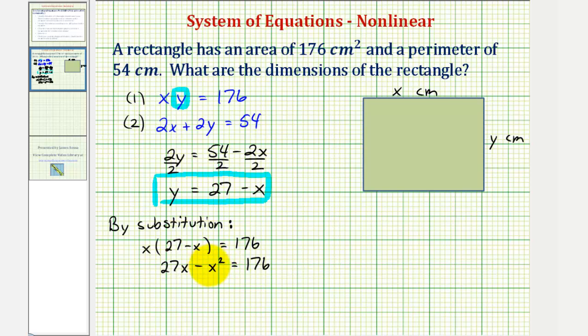We prefer the x squared term positive, so add x squared to both sides and subtract 27x from both sides. This gives us zero equals x squared minus 27x plus 176.